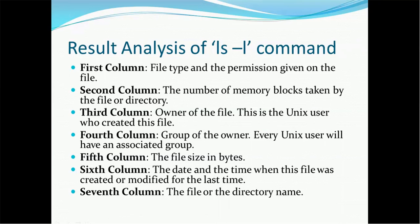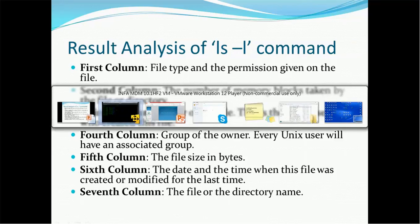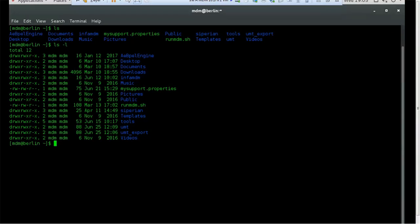Third column is owner of that file. This is the Unix user who created this file. The fourth column is group of owner. Every Unix user will have an associated group. So third and fourth are related to the owner of file and group of that file. For example, documents directory has MDM as an owner as well as there is an MDM group. So these are the information. Sometimes it's possible owner is different and group is also different.